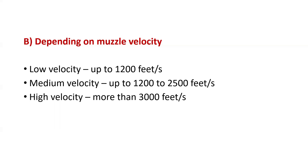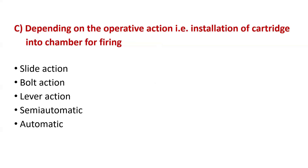The second one is depending on muzzle velocity. There are three kinds: low velocity up to 1200 feet per second, medium velocity from 1200 to 2500 feet per second, and high velocity more than 3000 feet per second.